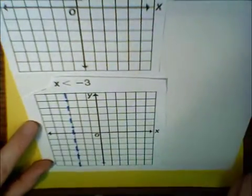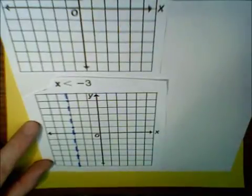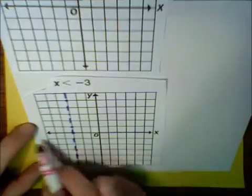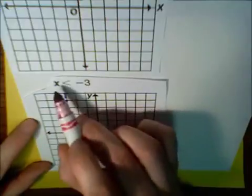Make sure your dashes are very distinct. Now, the question is, where do we shade? Again, the x-axis goes left-right.